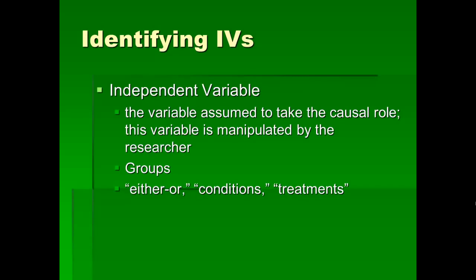Now that we've identified the variables and constants, we need to specifically identify the different types of variables. One type is the independent variable, defined as the variable assumed to take the causal role — it's causing something else to change, or it may be. This variable is manipulated, meaning controlled, by the researcher, so the researcher can determine who gets what. In our example, it's obvious that the thing taking the causal role is violent versus nonviolent cartoons. The researcher controls who gets which video, so the videos are the independent variables.